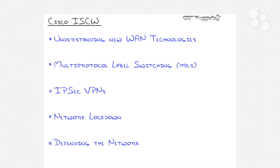Then look at the last three topics, which by far make up the vast majority of the video series. Understanding new WAN technologies is probably about four videos. Multi-Protocol Label Switching, three videos. IPSec VPNs, network lockdown, and defending the network — I'm looking at my chart here and we're looking at somewhere around 15 different videos that make up that portion of the series.